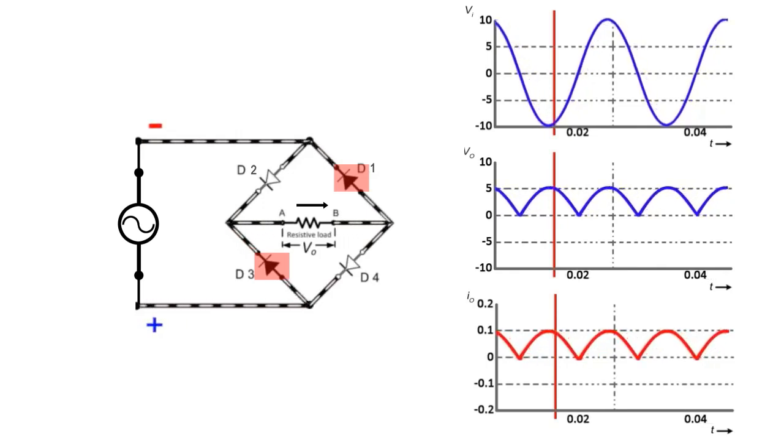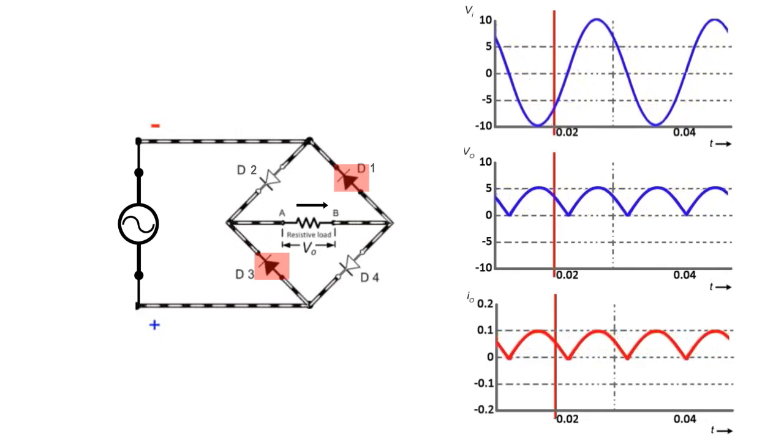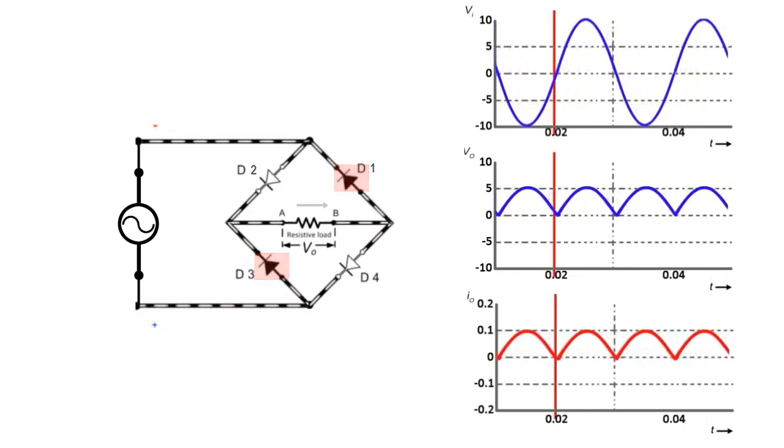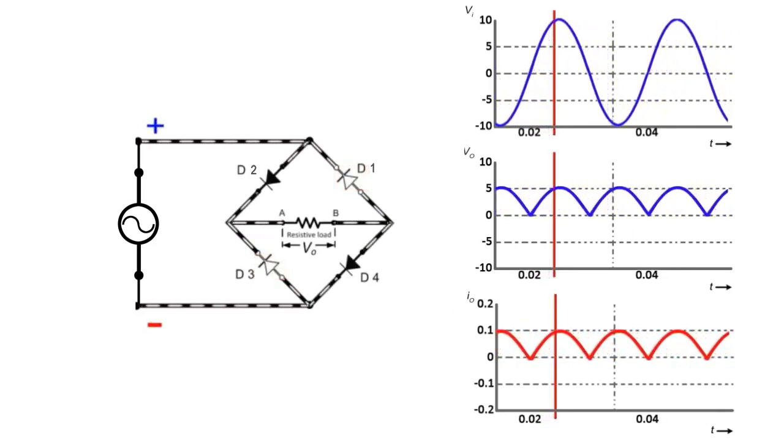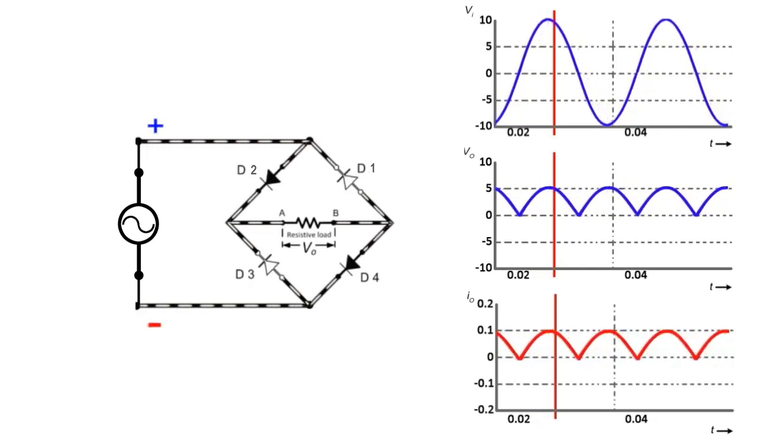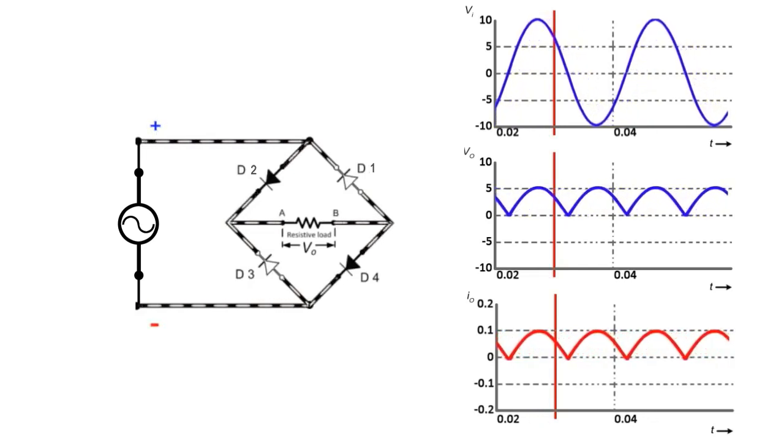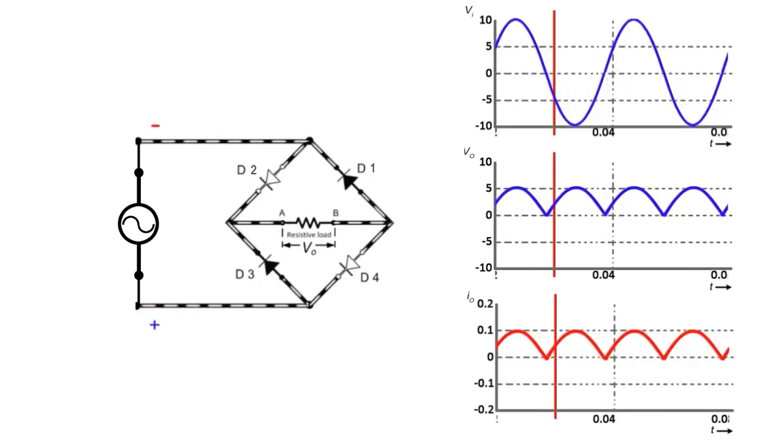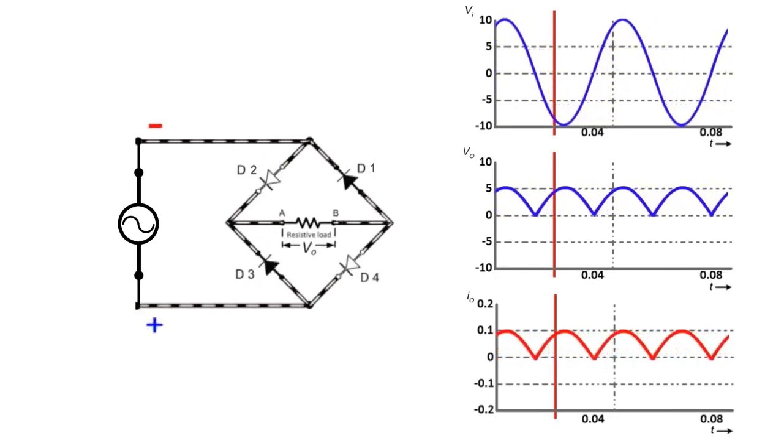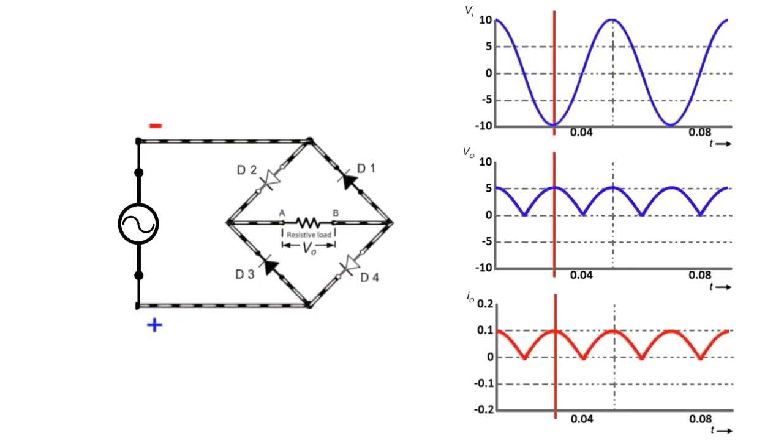With this circuit, bidirectional current gets converted into unidirectional current. We discussed this in detail in our previous video. This process is known as single-phase AC to DC conversion or single-phase rectification.